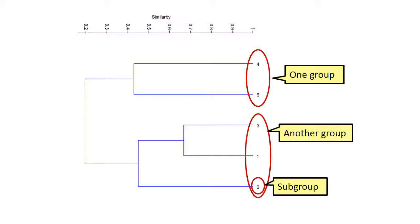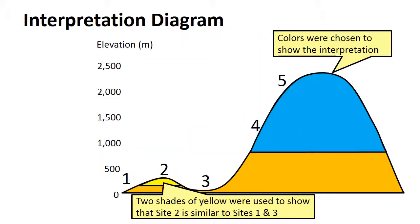Now that we have identified our groups, we can return to our experimental design and finish the interpretation. The mountain transect has been colored to show the general pattern of the tree distributions.